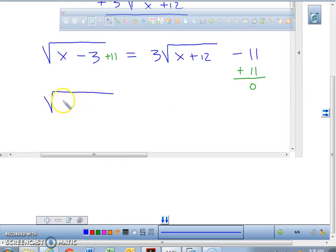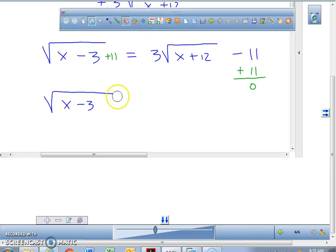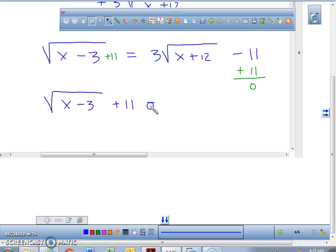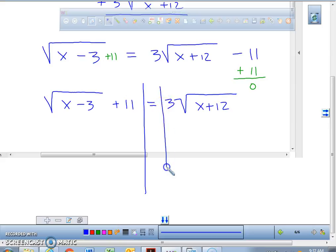We have the square root of x minus 3. Make sure that when you're writing this, you put the 11 on the outside of the radical, not on the inside. This is what I want you guys to have right now on your graph paper. I haven't solved anything yet. I've just moved things on the opposite side of the equal sign to get one radical equal to another radical.